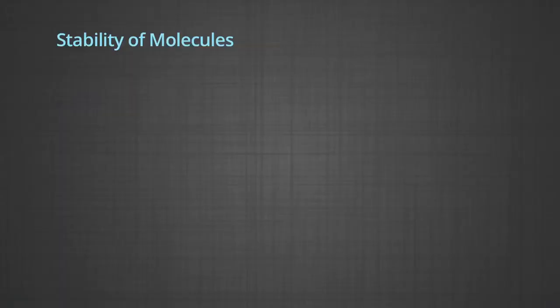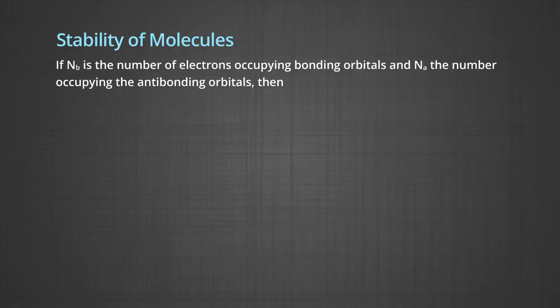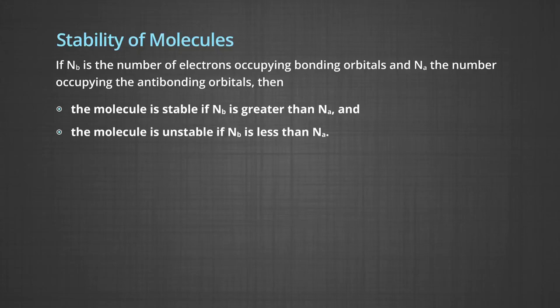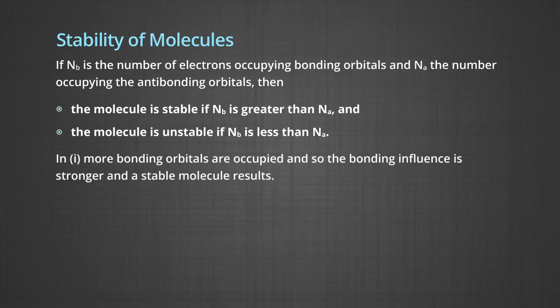Stability of molecules: if N_b is the number of electrons occupying bonding orbitals and N_a is the number occupying anti-bonding orbitals, then the molecule is stable if N_b is greater than N_a, and unstable if N_b is less than N_a. The more the bonding orbitals are occupied, the stronger the bonding influence and the more stable the molecule results.